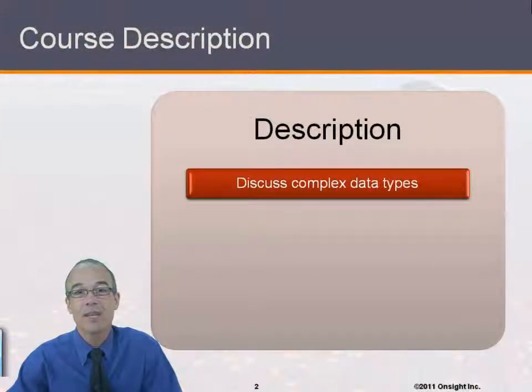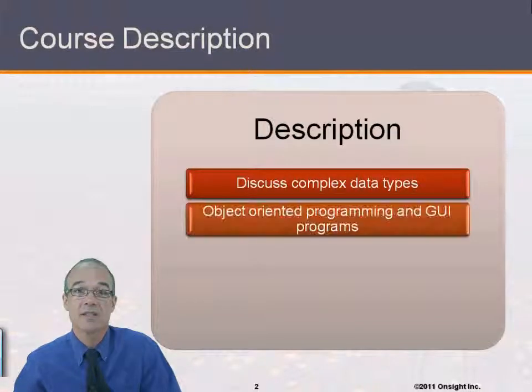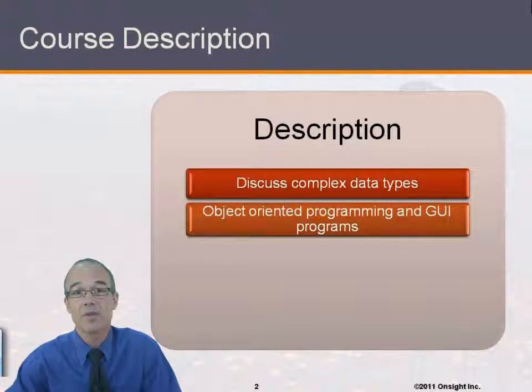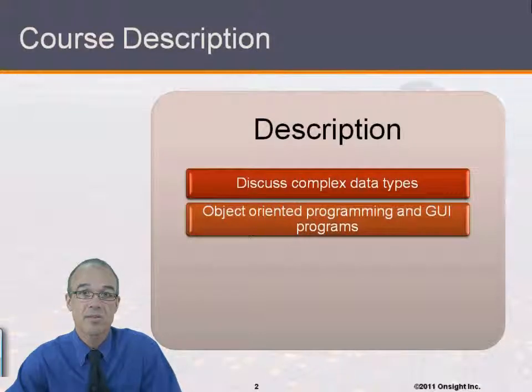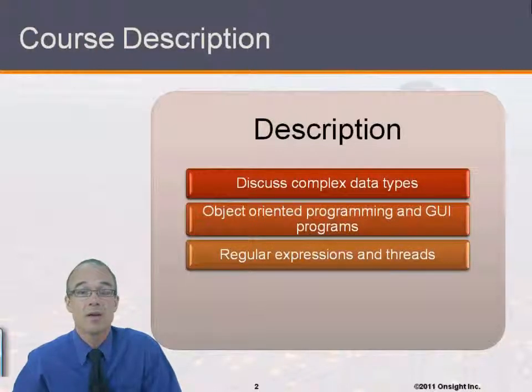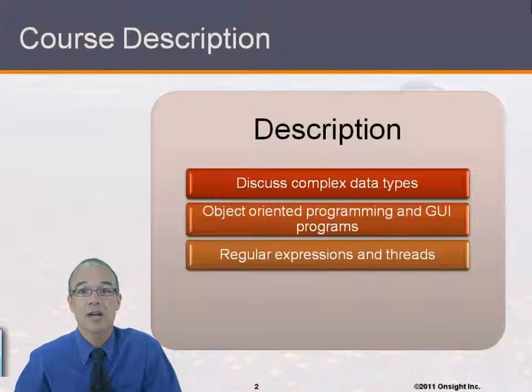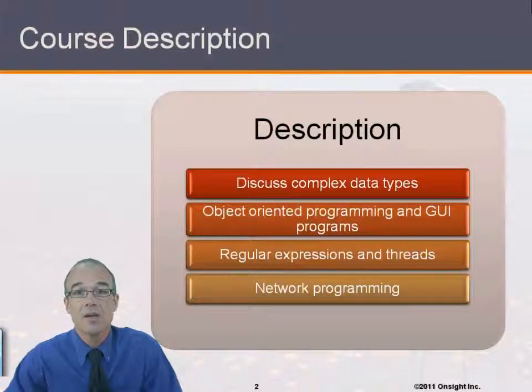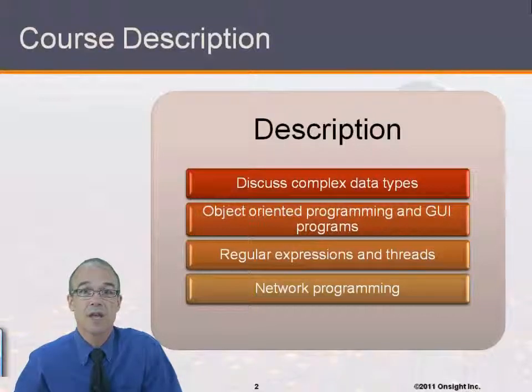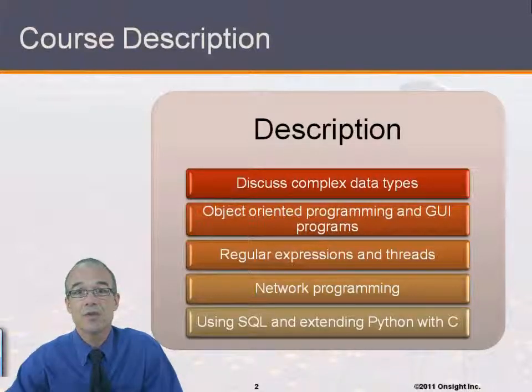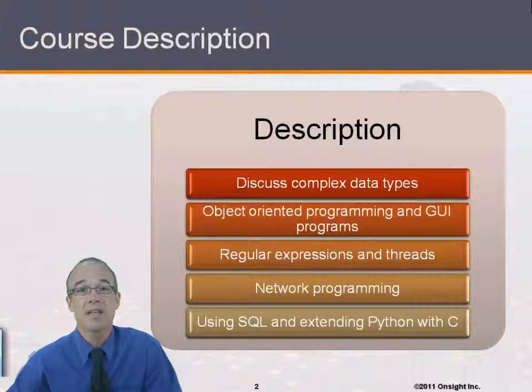This is a class where we discuss complex data types implemented in Python. We also talk about how Python is an object-oriented programming language and we start writing object-oriented programs. We also write GUI programs in Python so we can create GUI front-ends to our applications. Regular expressions and threads are also used in our programs, so we're going to talk about how to do that. We do network programming and write programs to do client-server communication. We also use SQL and we extend Python with C.